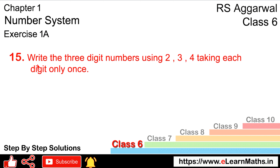Let's do question number 15 of exercise 1a, that is number system. Question number 15 is: write the 3-digit numbers using 2, 3 and 4, taking each digit only once. Let's write these 3-digit numbers.